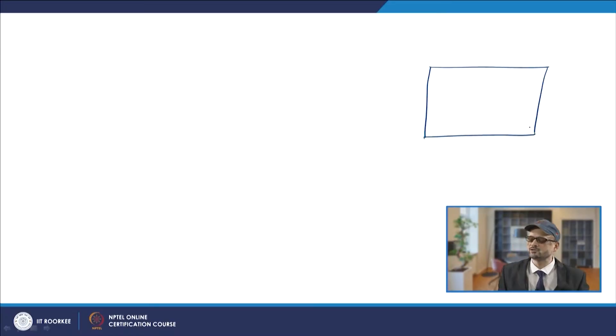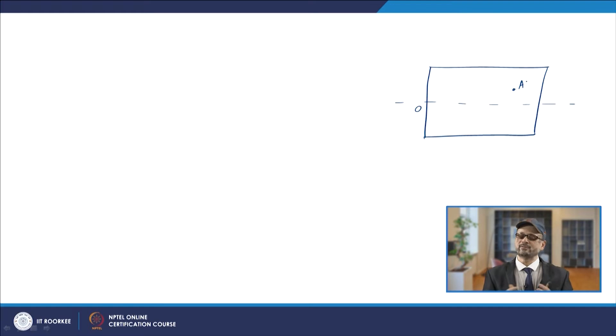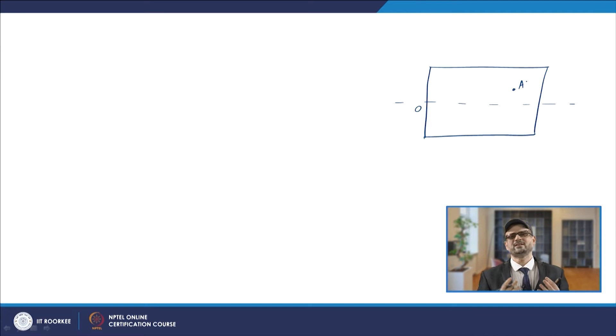In the earlier lecture, we took a large plate where this is the direction of welding. The origin is defined and a point A has coordinates x, y, z. We define one parameter zeta = x − vt, and accordingly we can obtain the expressions for ∂ζ/∂x and ∂²ζ/∂x² and so on.